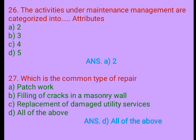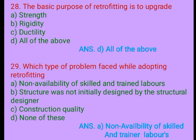Question 27. Which is the common type of repair? A. Patchwork, B. Filling of cracks in a masonry wall, C. Replacement of damaged utility service, D. All of the above. Answer: D. All of the above. Question 28. The basic purpose of retrofitting is to upgrade: A. Strength, B. Rigidity, C. Ductility, D. All of the above. Answer: D. All of the above.